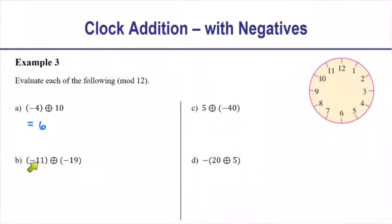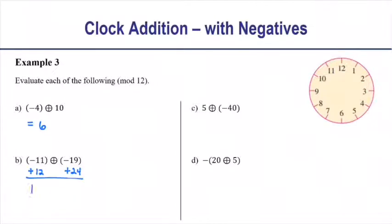For part B: we have two negative numbers, negative 11 circle-plus negative 19. Adding them directly gives a large negative number, so I'll add 12 to the first number and 24 to the second. Negative 11 plus 12 gives 1; negative 19 plus 24 gives 5. Now 1 circle-plus 5 is 6, so negative 11 circle-plus negative 19 is 6.